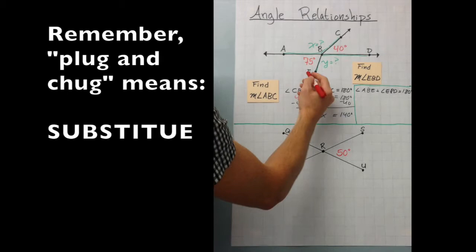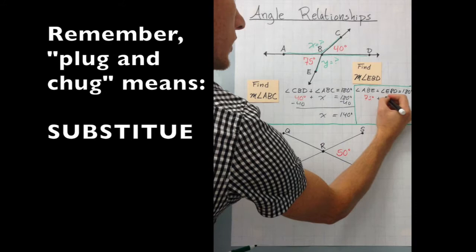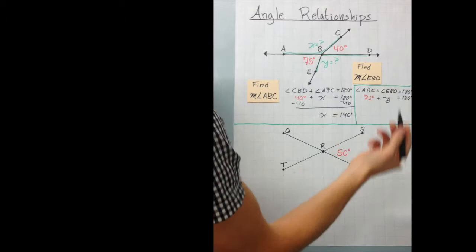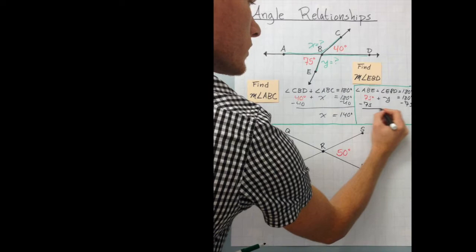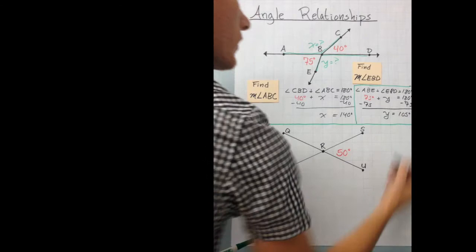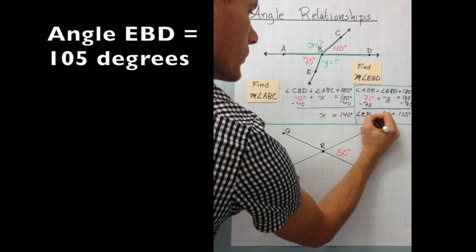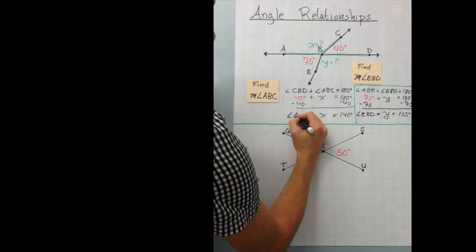So let's just plug and chug. 75 degrees is angle ABE. And we don't know what angle EBD is, but we call it Y. So we'll just stick to that. So again, it's just algebra. Minus 75 from both sides. And what we're left with is Y equals 105 degrees. And to be precise, we would say angle EBD, which equals Y, equals 105 degrees. Same thing over here.